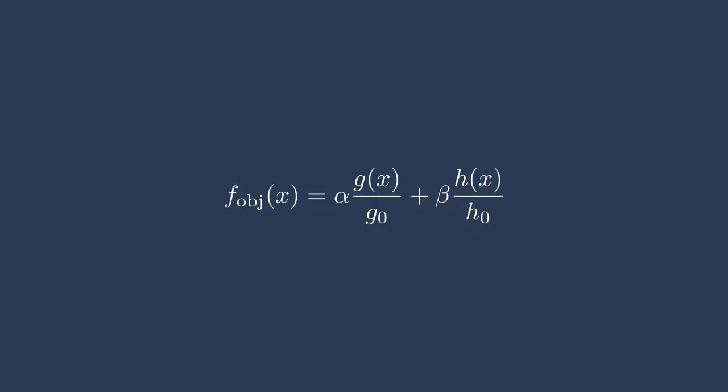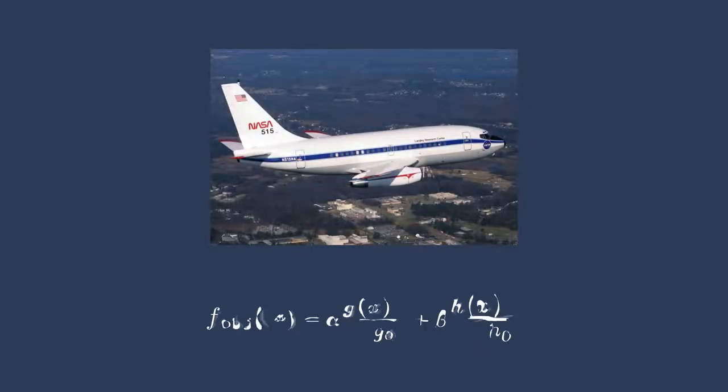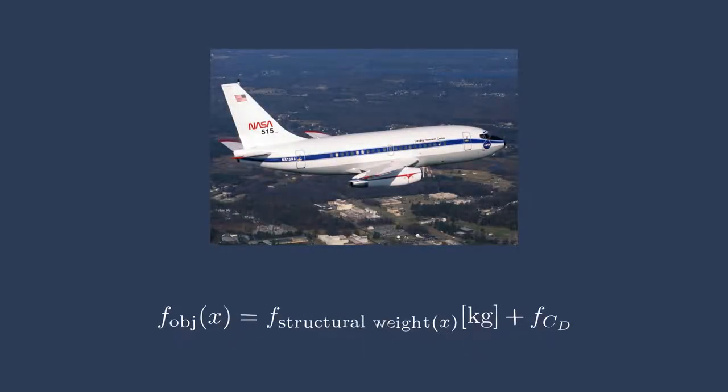One example would be in the case of aircraft design. We might care about the structural weight and the coefficient of drag of an aircraft. So if we're trying to minimize the structural weight and the coefficient of drag and simply add these two functions together, we could get an answer, but the answer will probably be not what we're looking for. This is because the structural weight is often on the order of thousands of kilograms, whereas the coefficient of drag is on the order of 0.025.